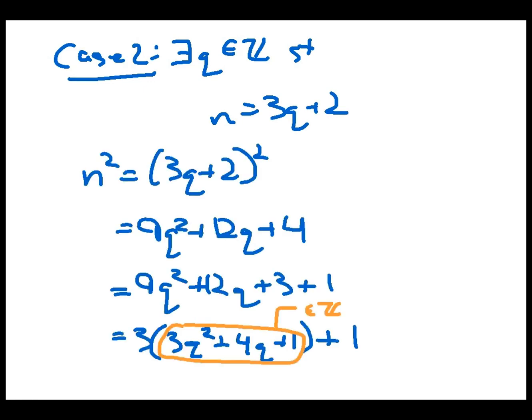Now we move on to case 2. And that's where the remainder is 2 when you divide n by 3. This means that there exists an integer q such that n equals 3q plus 2. Again, let's get an expression for n² and there it is, expanded all the way out using algebra. Once again, by closure, the expression in parentheses is another integer. So once again, 3 divides n² minus 1. And hence, n² is congruent to 1 mod 3 in this case as well.